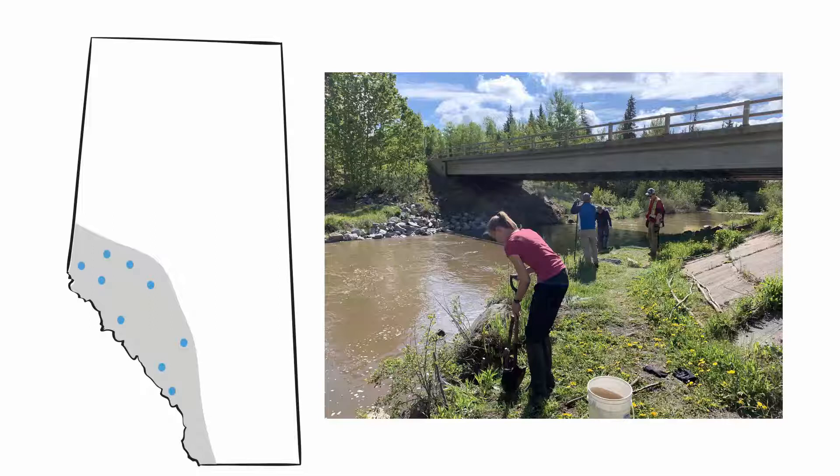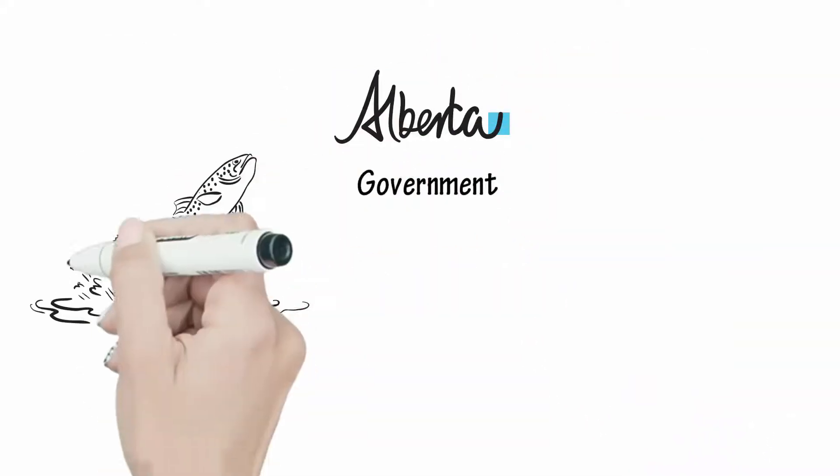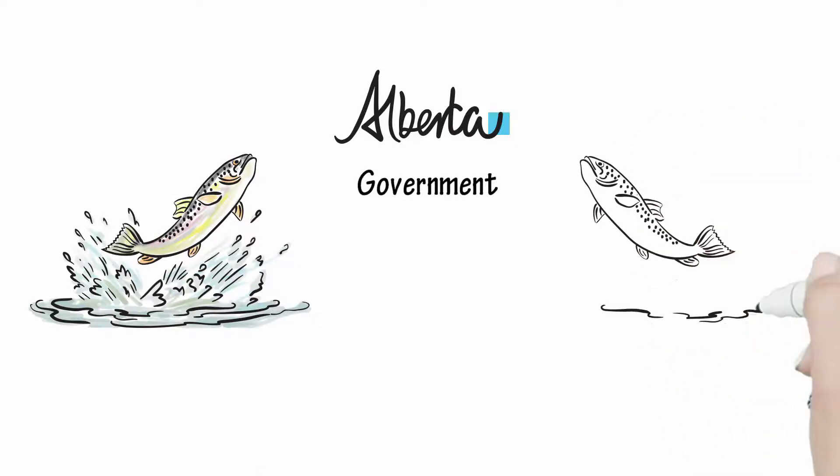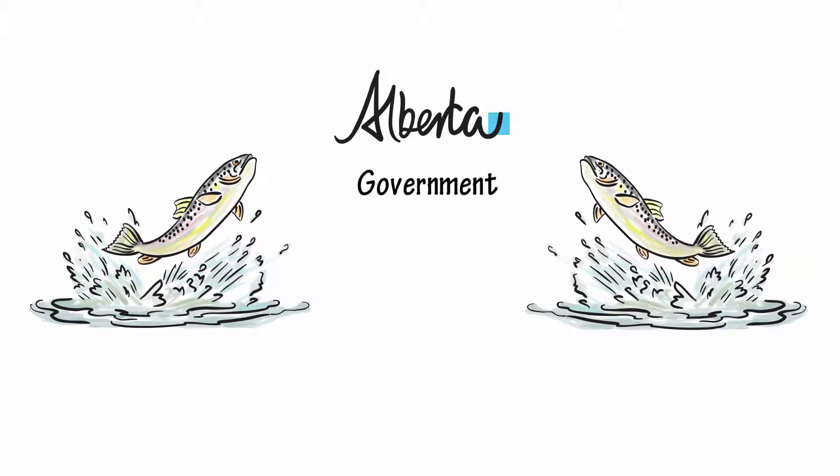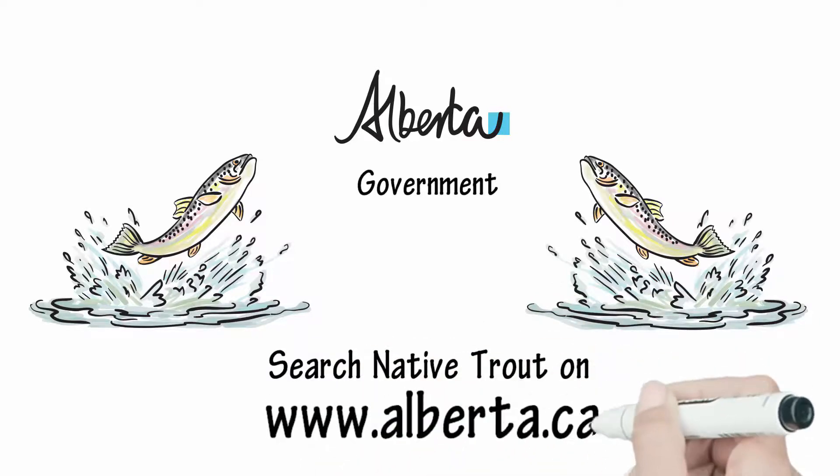As we learn how to most efficiently recover populations, actions will be taken in even more watersheds. The Alberta government is taking action to protect Alberta's native trout. To learn more about this program, management actions in the focal watersheds, and how you can help, please visit the website below, www.alberta.ca.